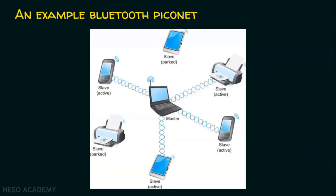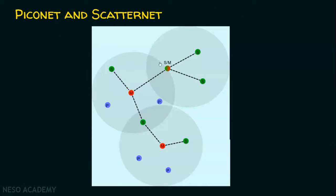Now let's see Piconet and Scatternet. A Piconet has a master and up to seven slave devices. A collection of Piconets is called a Scatternet. A node can be a master in one Piconet and a slave in another Piconet — so a single node can act as both master and slave across different Piconets. That's the relationship between Piconet and Scatternet.